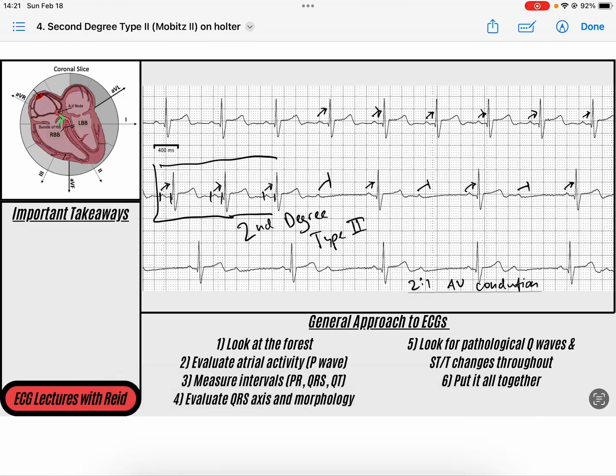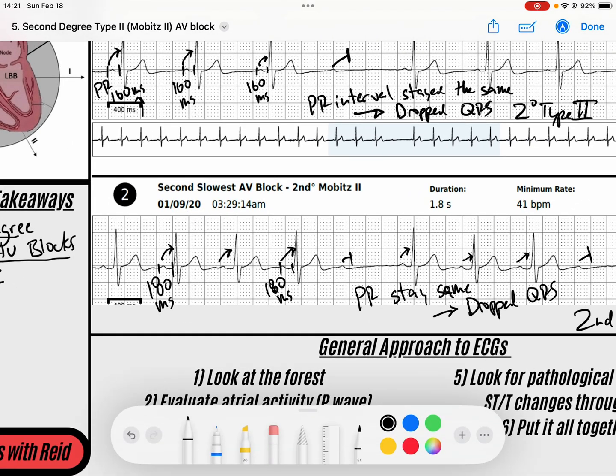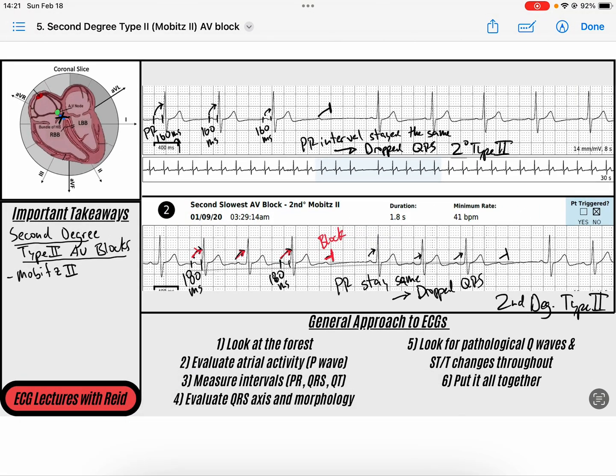Let's review. What is second degree type 2? It's when the PR interval stays the same and then it drops, because of all or nothing conduction. So we have P, QRS, P, QRS, P, QRS - the PR intervals all stay the same, and then we drop. That's a block. That's a second degree type 2 AV block.